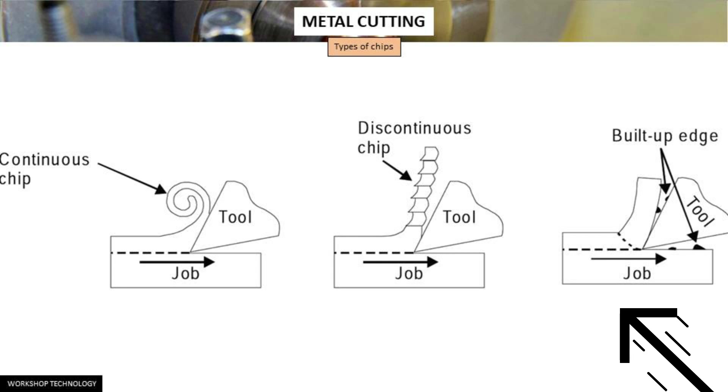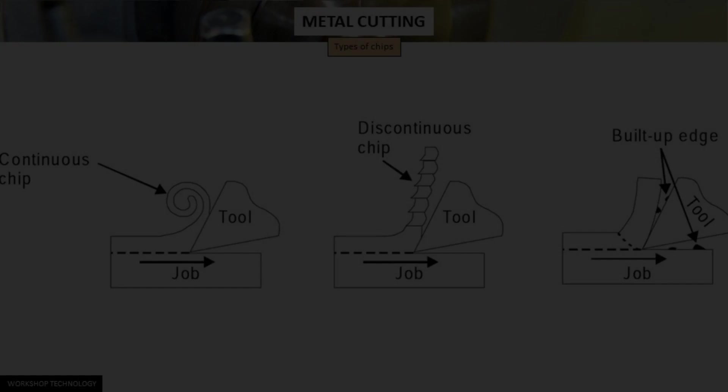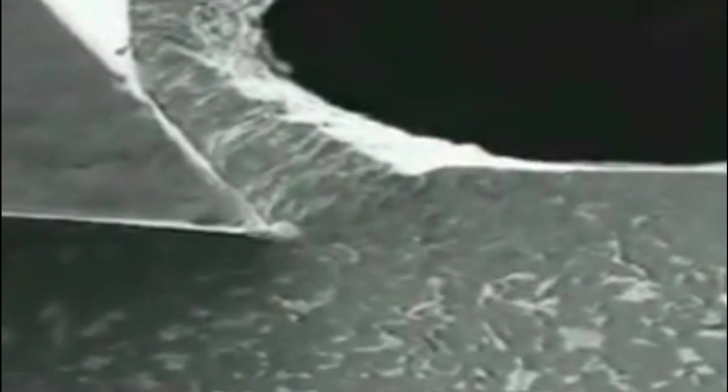This figure here shows a continuous chip with built-up edge. During the cutting operation, the temperature rises and as the hot chip passes over the face of the tool, alloying and welding action may take place due to high pressure. This results in the formation of weak bonds in the microstructure and weakens the particles. Owing to the high heat and pressure generated, these particles get welded to the cutting tip of the tool and form a false cutting edge. This is what we call a built-up edge.